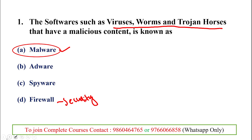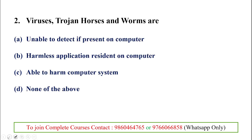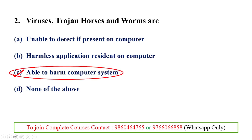The second question: viruses, trojan horses, and worms — what are they? These are malicious software, so they harm the computer system. The answer is: they are able to harm computer systems.